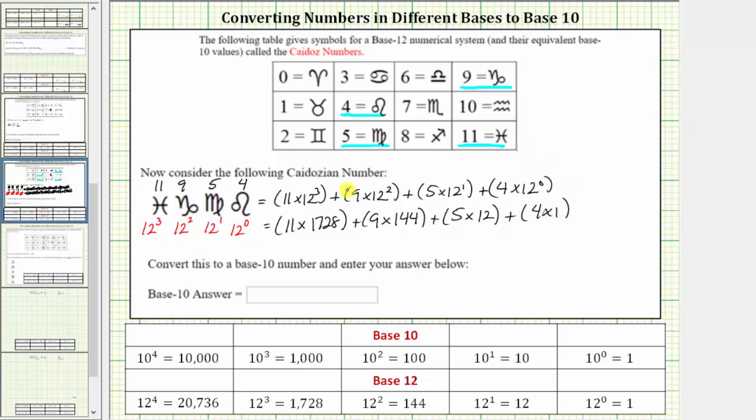11 times 1728 is 19,008, plus 9 times 144 is 1,296, plus 5 times 12 is 60, plus 4 times 1 is 4.